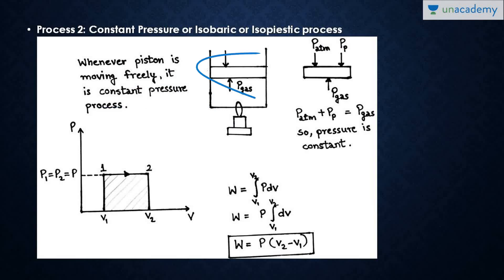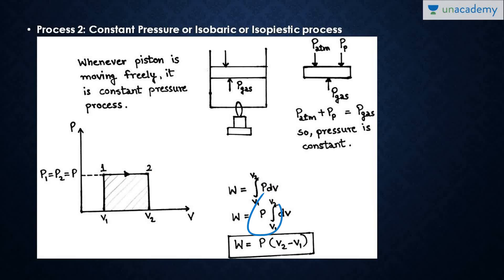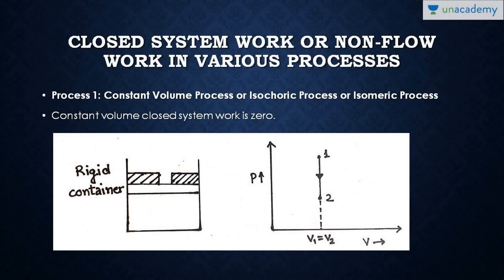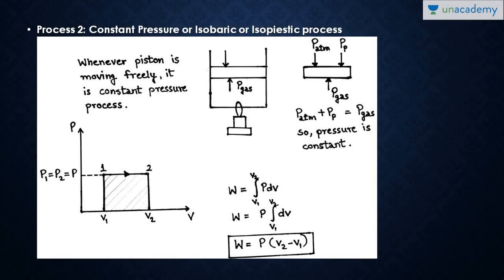From above the piston there is atmospheric pressure plus the pressure of the piston, and from below there is gas pressure. So gas pressure equals atmospheric pressure plus piston pressure, keeping the pressure constant. On the PV diagram, constant pressure is a horizontal straight line. The closed system work is W equal to integral PDV. Since pressure is constant, taking it out gives work transfer W equal to P times (V2 minus V1).